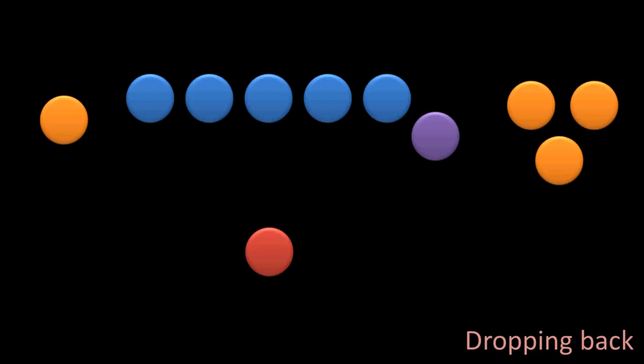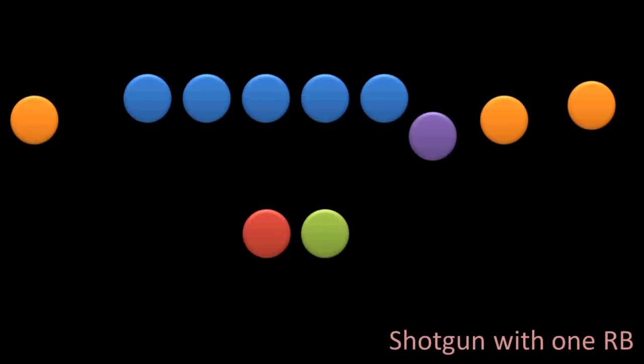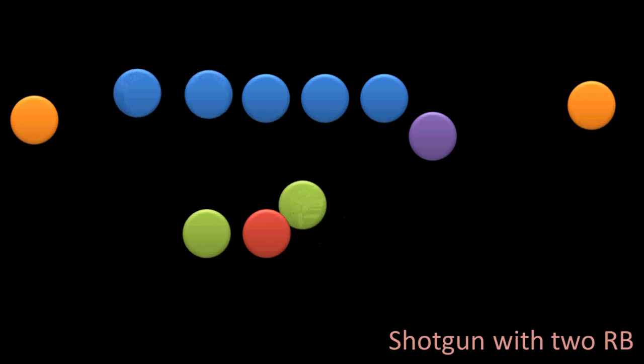But it doesn't have to be. So there can be a running back, as we saw in that photo, or two beside the quarterback while he's in shotgun. And so that after the quarterback gets the snap, he can just turn and hand the ball off to his running back.